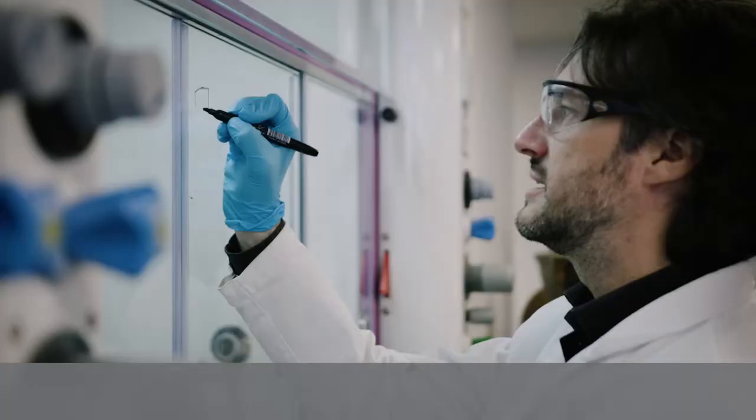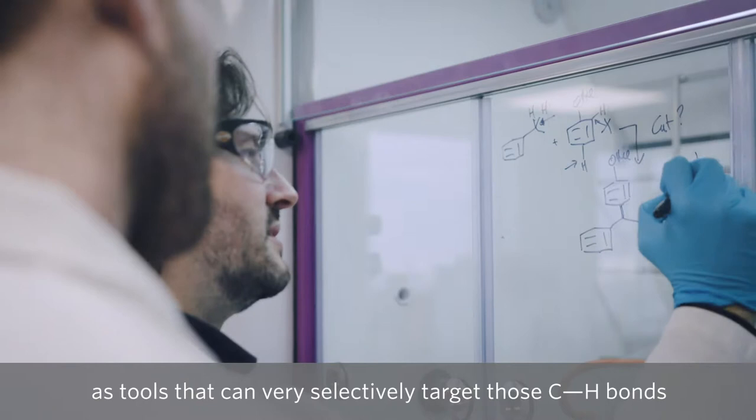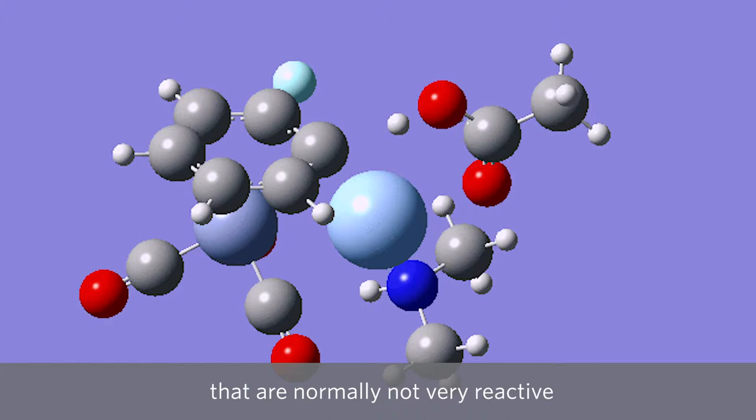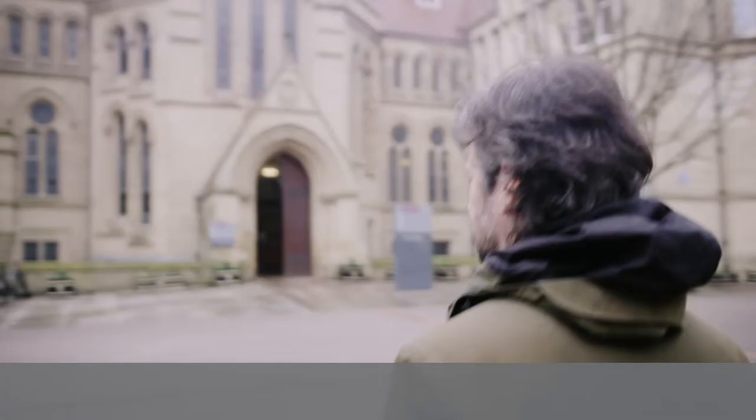We have managed to make advances in understanding how we can use transition metals as catalysts, as tools that can very selectively target those CH bonds without affecting the sensitive parts of a molecule. You can see here an aromatic molecule with several carbon-hydrogen bonds that are normally not very reactive. This is a silver-based catalyst that is approaching the carbon-hydrogen bond and breaking it at the same time as it's forming a new bond between that carbon and the silver catalyst.